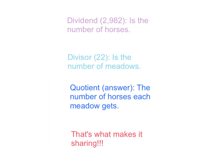Here, the dividend is 2,982, which in this case is the number of horses. The divisor, in this case 22, is the number of meadows. The quotient, the answer, is the number of horses each meadow gets.